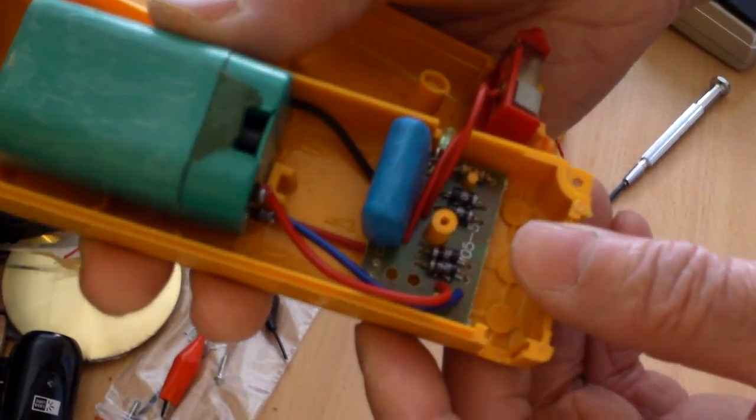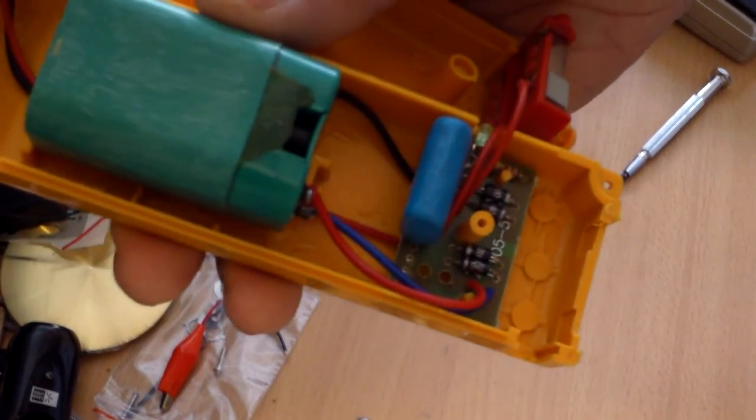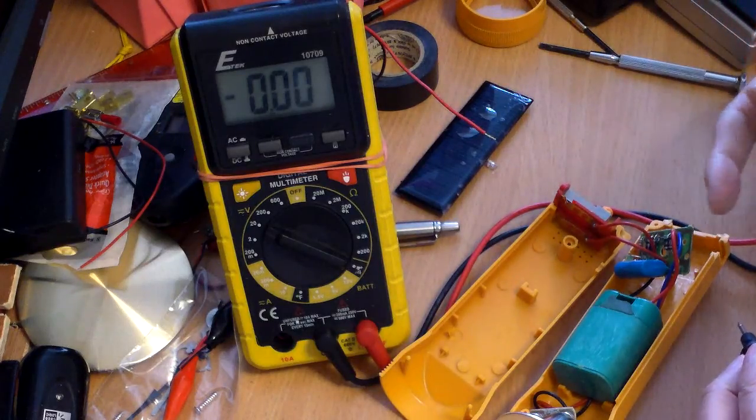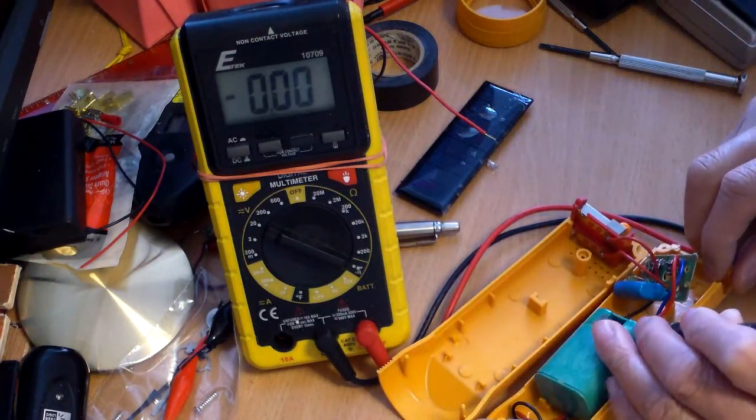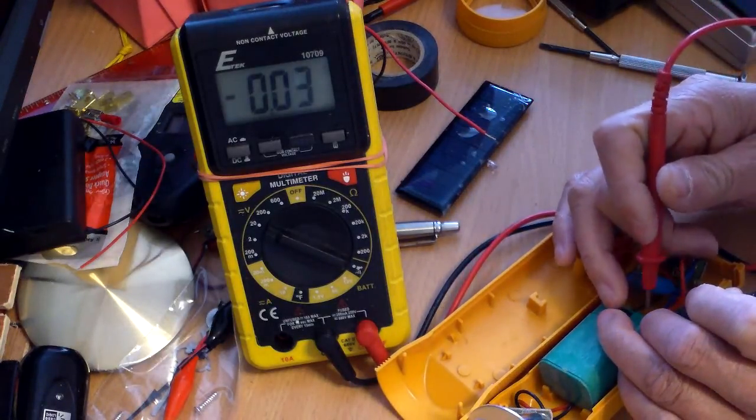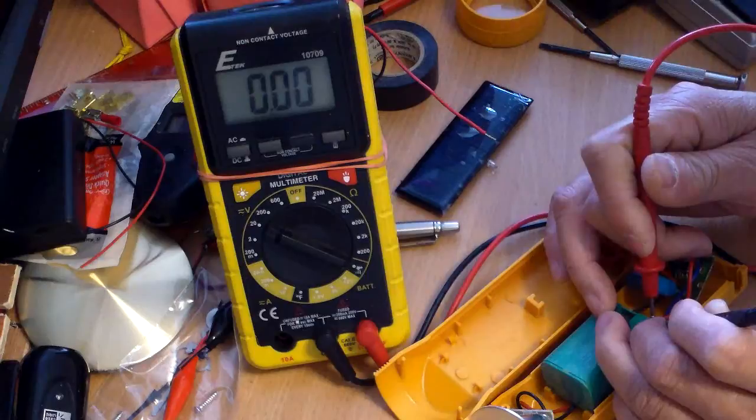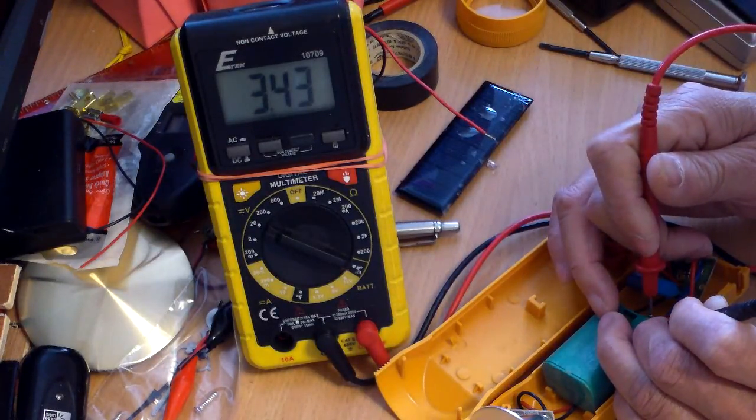And I'm gonna see what can be done with this. The first thing is when I open this, this is the rechargeable battery pack, and I wanted to know what kind of voltage it gives out. Apparently it is giving out about 3.3, 3.43 volts.